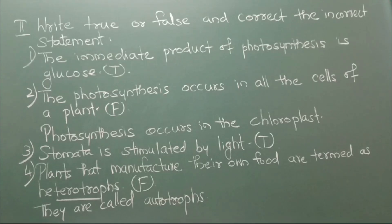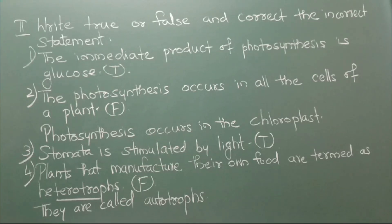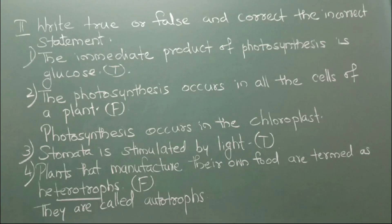Now we will see write true or false and correct the incorrect statement. Number 1: The immediate product of photosynthesis is glucose. It is true. Number 2: Photosynthesis occurs in all the cells of a plant. It is false. The correct statement is photosynthesis occurs in the chloroplast, not in all the cells.